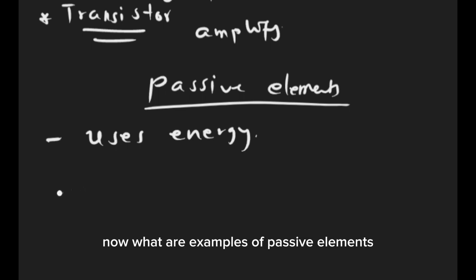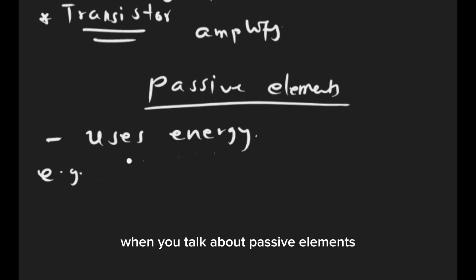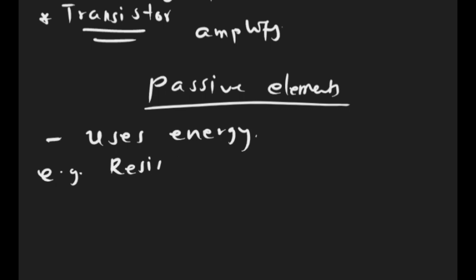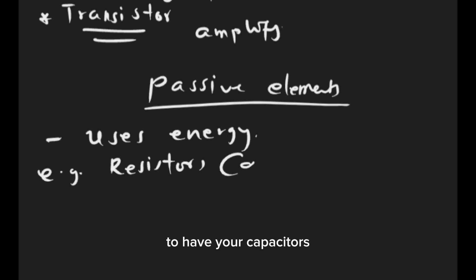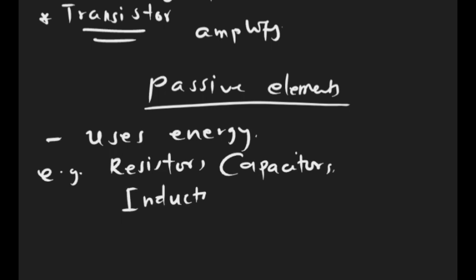What are examples of passive elements? When you talk about passive elements, you can have resistors, you can have capacitors, you can have inductors, and so on.